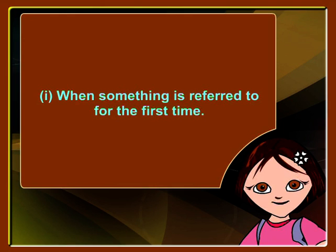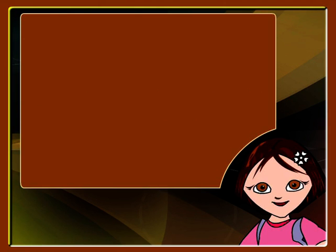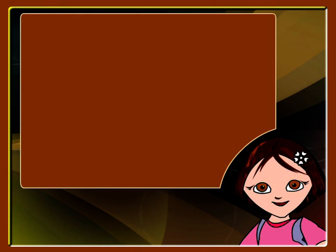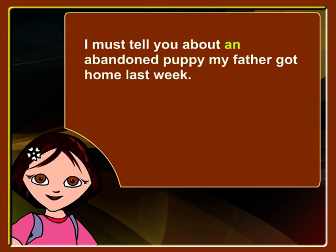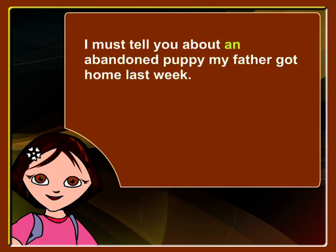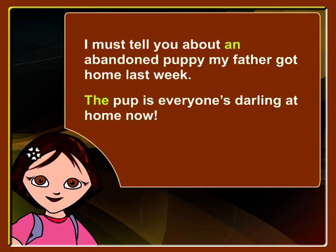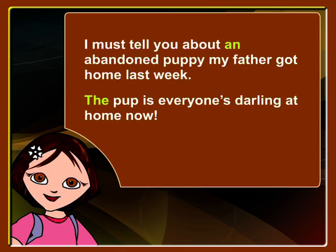The indefinite article is used when something is referred to for the first time. For example: 'I must tell you about an abandoned puppy. My father got home last week. The pup is everyone's darling at home now.' Here, Rohini uses the indefinite article AN before 'abandoned puppy' in the first sentence, since that is the first time the noun puppy is mentioned. When the noun is repeated for the second time in the next sentence, the definite article THE has been used.